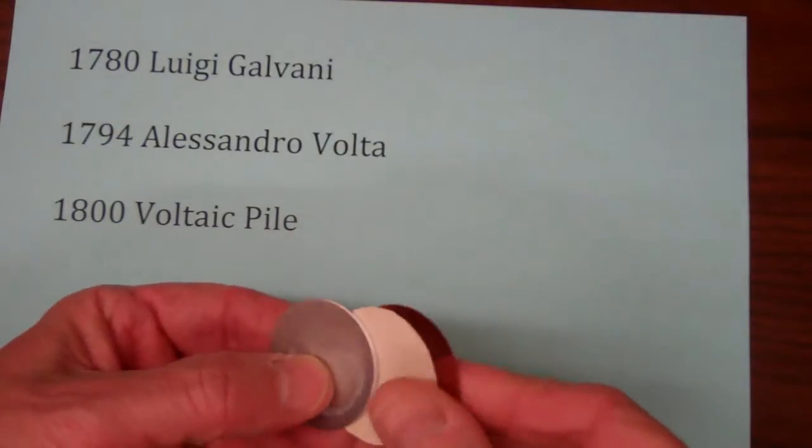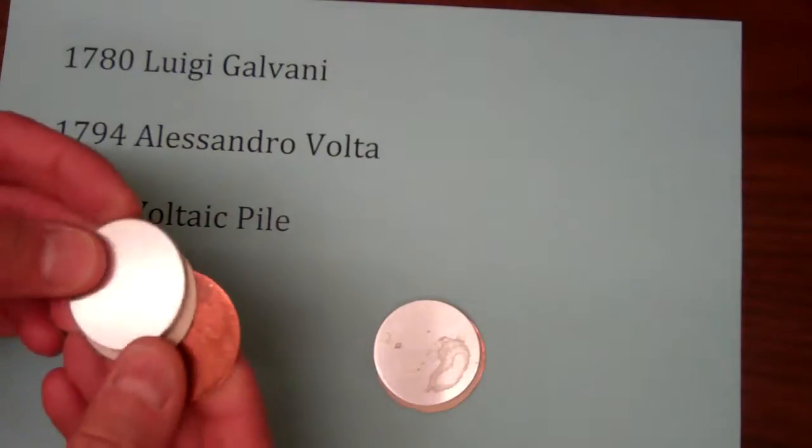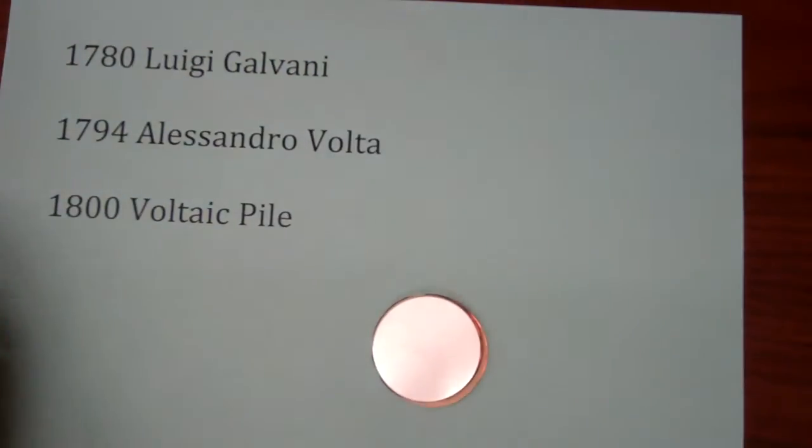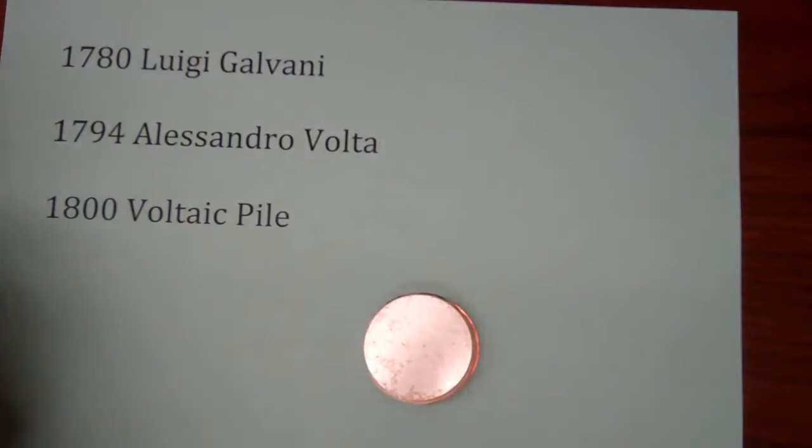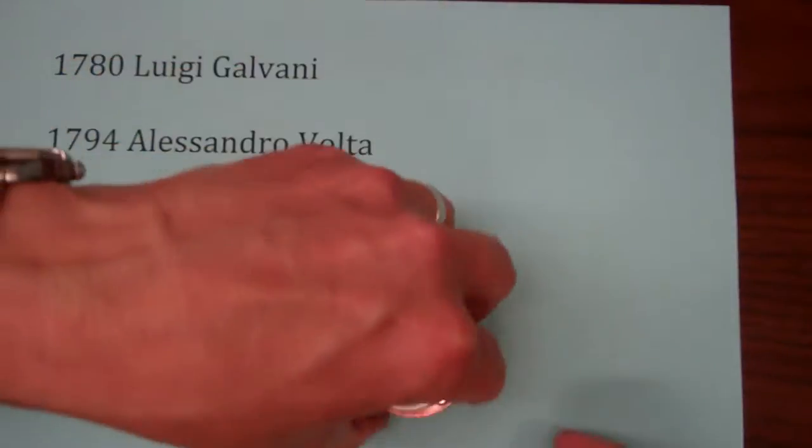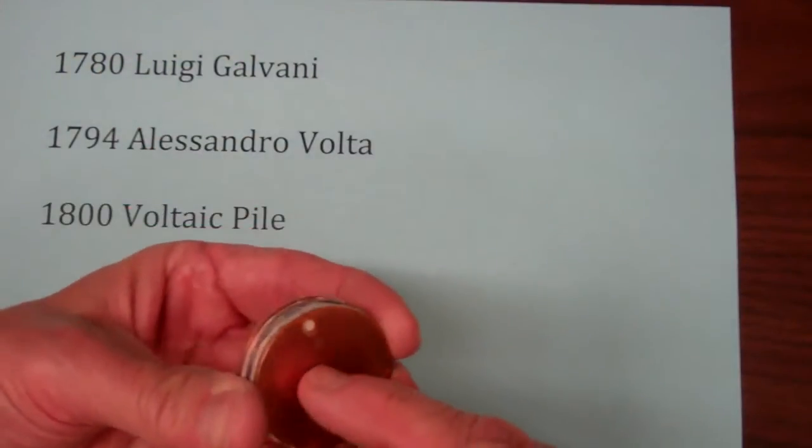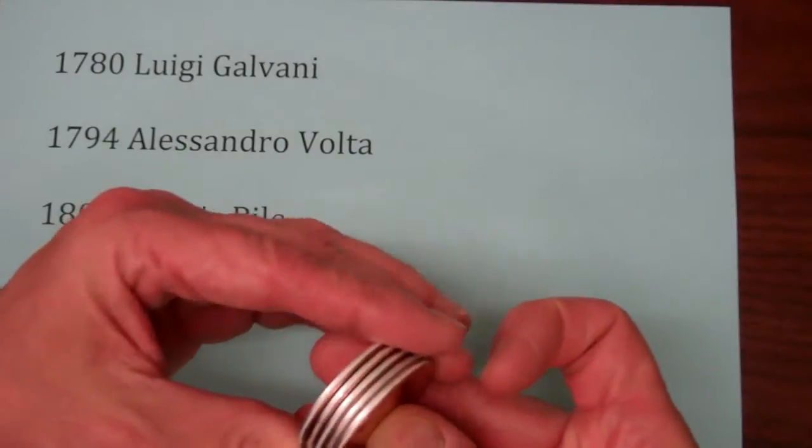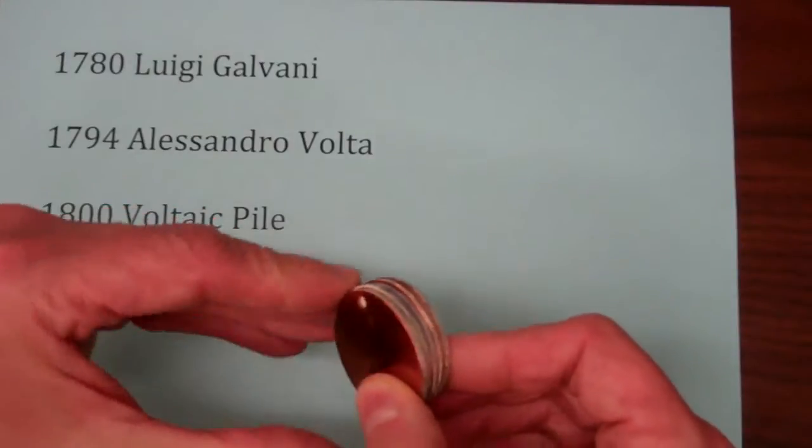In 1800, Volta took his cell and then he made several more cells and he stacked or piled them together, hence the name Voltaic Pile. And what he found was if he made a connection now between the copper and the zinc, he again got a continuous flow of electricity, but a much larger amount of electricity.